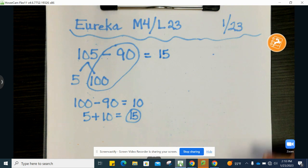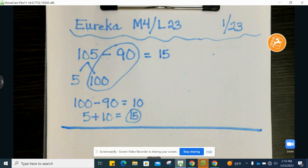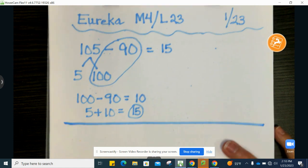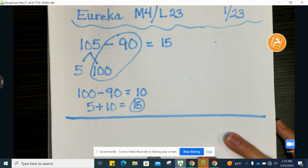So we'll do a couple more for practice, and you'll do all of them the same way on your workbook pages. We're going to have a problem where we decompose, pull out a 100, and then we will put the other part here. So let's try this one.